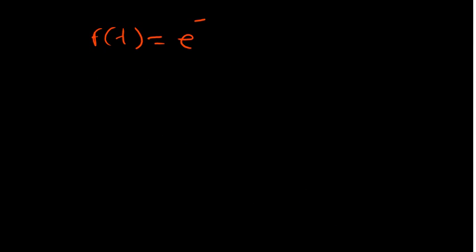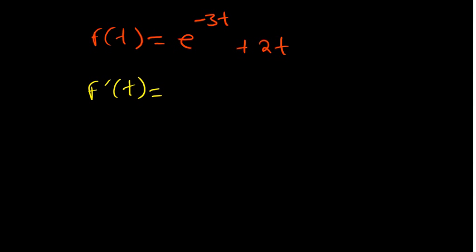Let's look at something more advanced — an exponential function. To find critical points, first find the derivative. For an exponential function, you multiply by the derivative of the power and the natural log of the base. In this case, the derivative of -3t is -3, multiply by the original function, and the natural log of e is just 1.